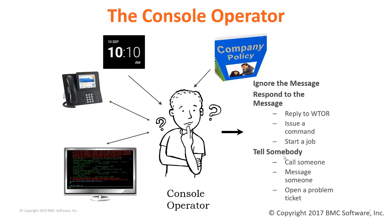For each of these events, such as system messages, phone calls, and time-based requirements, operators must decide to ignore the message or event if it is of low importance or does not require any response, tell somebody about it such as a systems programmer or someone in the help desk area, or respond to the message or event by replying to a message or entering a command.